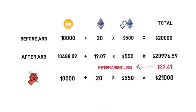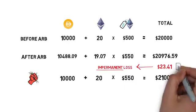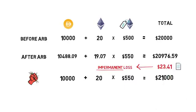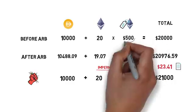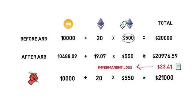Impermanent loss is called impermanent because at this point the LP lost $23.41 only on paper. If the LP doesn't withdraw their liquidity and the price of ETH goes back to $500, the impermanent loss is cancelled back to $0. On the other hand, if the LP decided to withdraw their liquidity, they would realize their loss of $23.41 permanently.